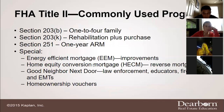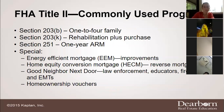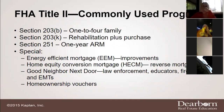FHA Title 2 commonly used programs include the 203(b) — one to four family — the 203(k) which is the rehab plus purchase, and the Section 251 which is a one-year ARM. The majority of the time dealing with FHA, you're going to see a lot of Section 203(b), which is in regards to the one to four family contract.